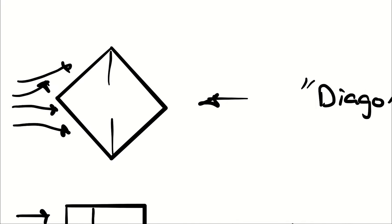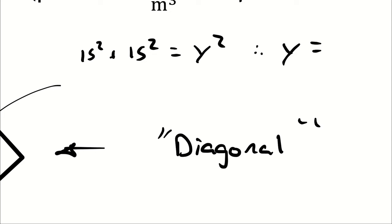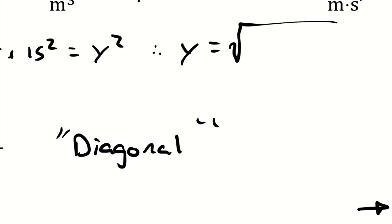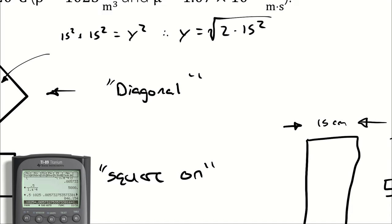I mean, while we're here, actually, let's not call that x. Let's call that y so as to not get confused with the boundary layer thickness. So I'm saying 15 squared plus 15 squared is equal to y squared. Therefore, y is equal to the square root of 2 times 15 squared. So the square root of 2 times 15, which is approximately 1.4 times 15. But, you know, in the interests of precision, we can say square root of 2 times 15 squared.